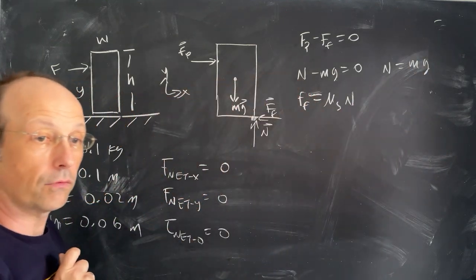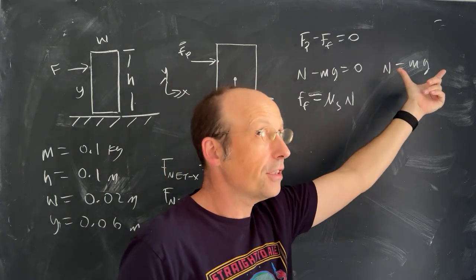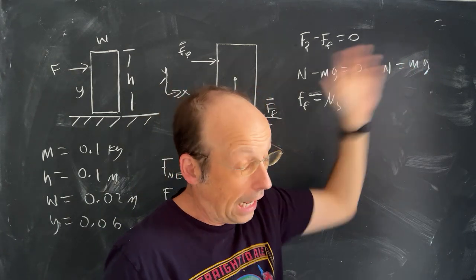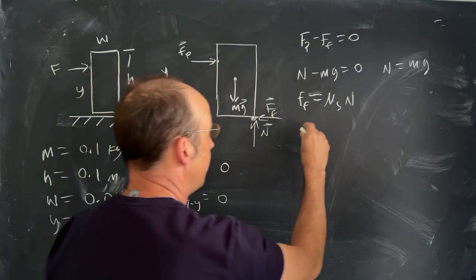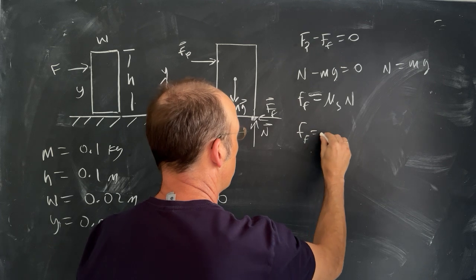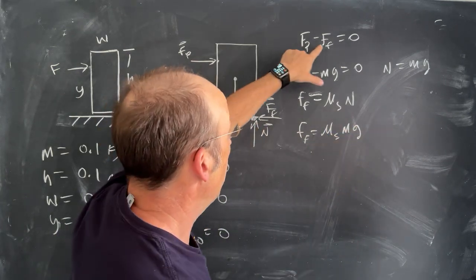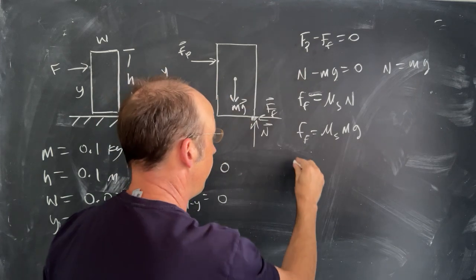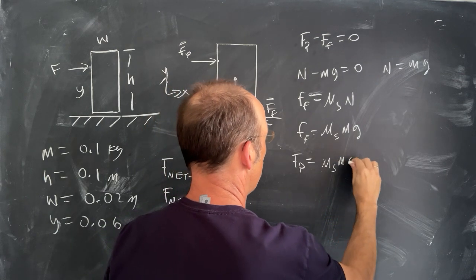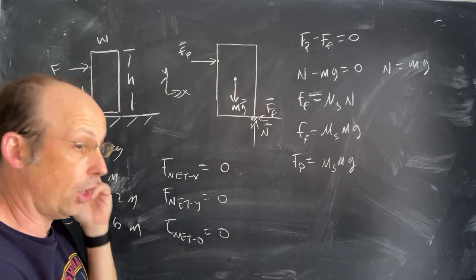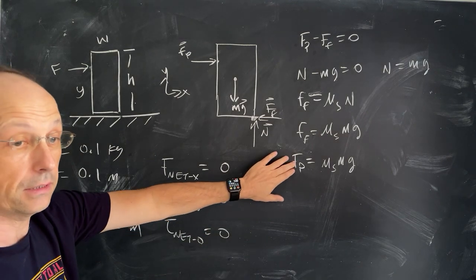N equals Mg. And again, I want to caution you. This comes up all the time. This is only true in certain situations. Don't think the normal force is equal to the weight. Happens to be a lot of the times, but not always. Okay, we got that. So I can write this. The friction force is equal to mu S times Mg, and that's that coefficient of friction. And up here, I can make the relationship that Fp is equal to mu S Mg. So now I need to find something. I need to find an expression for this.